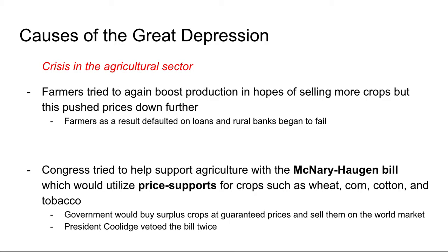Congress saw this and tried to support farmers with price supports — setting a floor on what the price could be for certain crops like wheat, corn, cotton, and tobacco. This was called the McNary-Haugen bill. The government would buy surplus crops at guaranteed prices and sell them on the world market to ensure crop prices. However, President Coolidge vetoed the bill twice — he didn't want government intervention, believing the market would fix itself. But it didn't, and this is the collapse of agriculture; farms were honestly some of the places where people struggled the most.